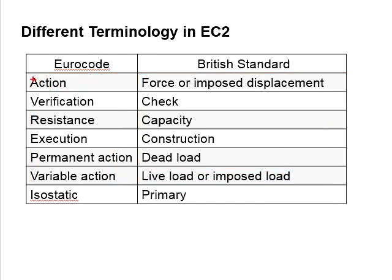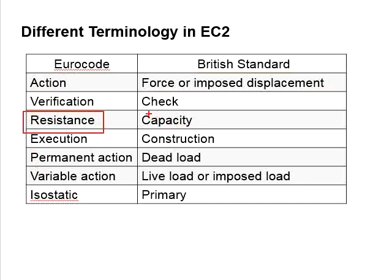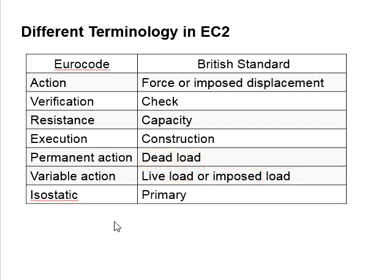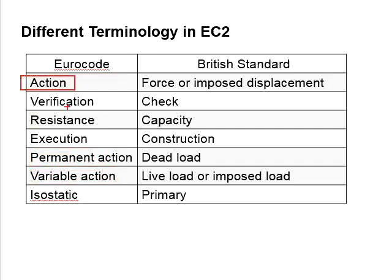In Eurocode, 'action' refers to the forces or imposed displacement, whereas in British Standard it is simply called forces. As for 'resistance,' it is referred to as 'capacity' in BS. The dead load and live load or imposed load are termed as 'permanent actions' and 'variable actions' in Eurocode. These are the common terms normally used in Eurocode.